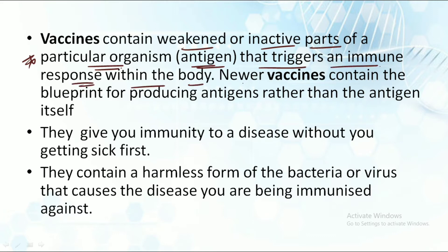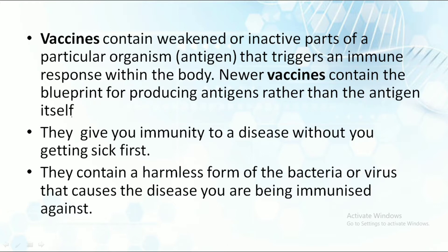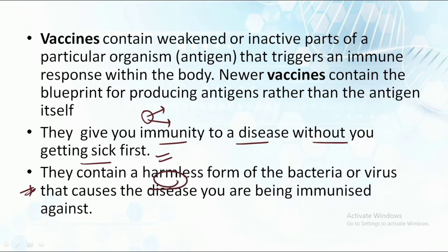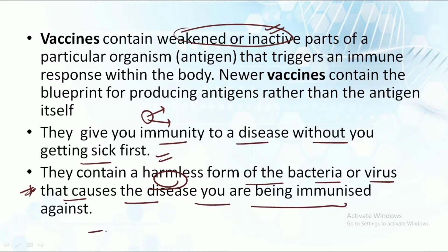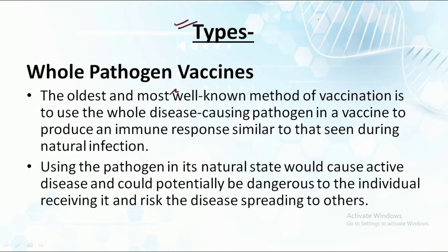Newer vaccines contain the blueprint for producing the antigens rather than the antigen itself. So vaccines could either contain the antigens that cause the disease, or the blueprint of the antigens, so the actual antigen is not given to our body — making it safer. They give us immunity to the disease without getting sick first, containing a harmless form of the bacteria or virus that causes the disease.